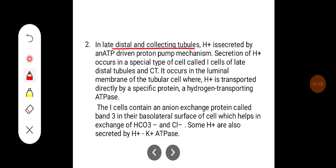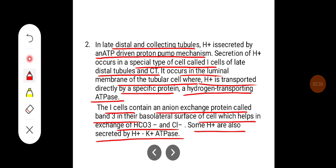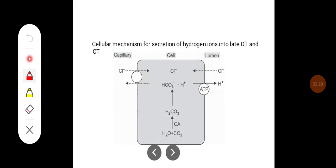In the late distal collecting tubules, H+ ions are secreted by an ATP-driven proton pump mechanism. Secretion of H+ ions occurs in a special type of cell called the I cell of late distal tubules and collecting ducts. It occurs in the luminal membrane of the tubular cell where H+ ions are transported by a specific protein, hydrogen-transporting ATPase. The I cells contain an anion exchange protein called band 3 in their basolateral surface, which helps in exchange of bicarbonate and chloride. Some hydrogen ions are also secreted by hydrogen-potassium ATPase. This diagram shows the active pump secreting H+ ions into the tubular lumen; these H+ ions are derived from the metabolism of carbonic acid.